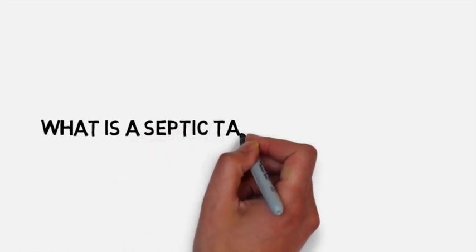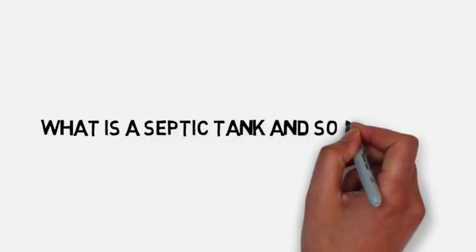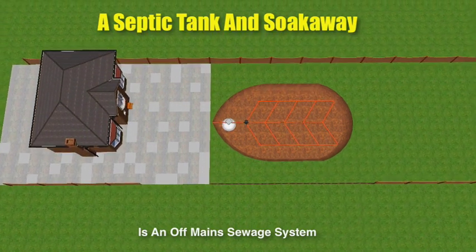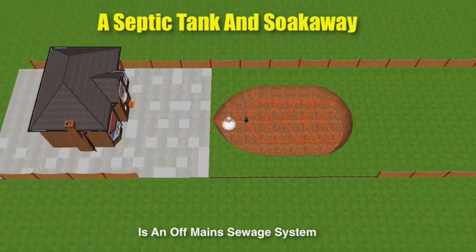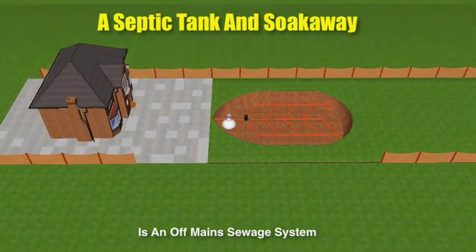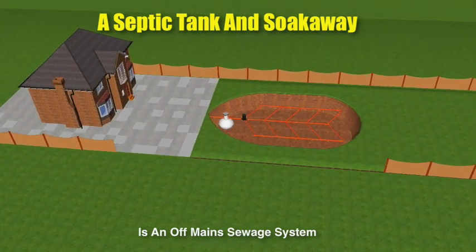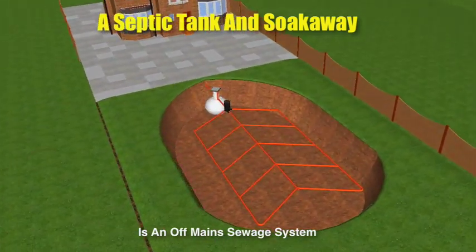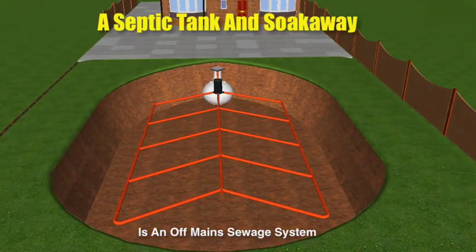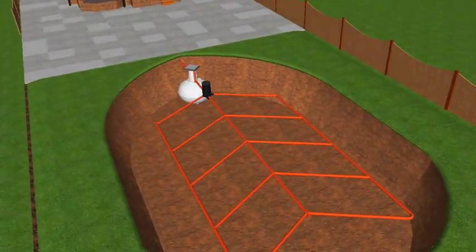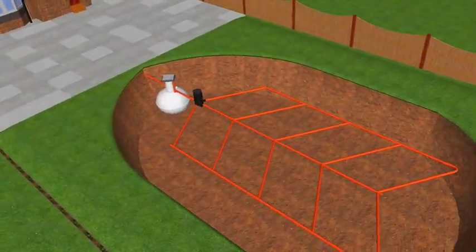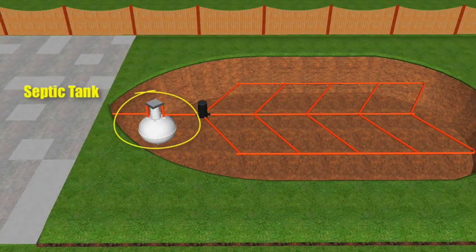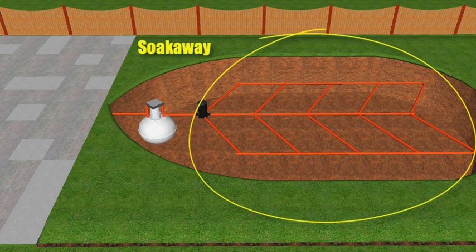So, what is a septic tank and soak away? A septic tank and soak away is an off-main sewage system, designed for properties that are not connected to the mains drainage. This kind of sewage system normally comprises of two main components: number one, the septic tank, and number two, the soak away.